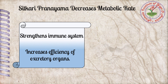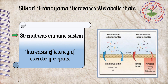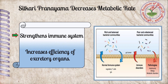Sitkari pranayama decreases metabolic rate. It is performed by breathing slowly through the mouth by tightening the teeth. During this practice, a good bacteria called bifidobacterium, which exists in the mouth, moves toward the stomach along with saliva. It is one of the major bacteria making up the colon flora and also exists in the gastrointestinal tract and vagina. This practice enhances the quantity of bifidobacterium in the gut, which resists microbial infections and strengthens the immune system.